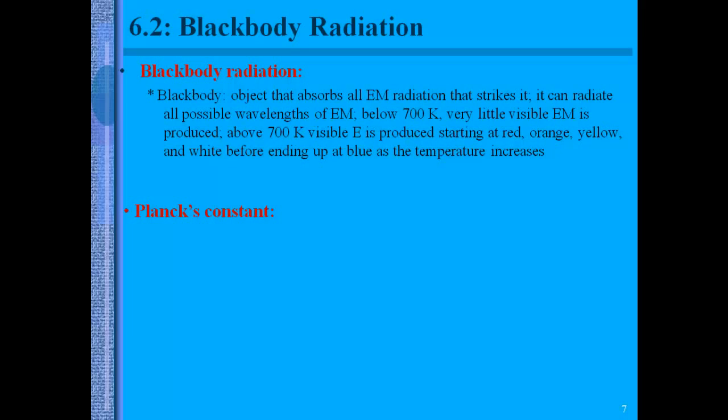But above 700 Kelvin, you'll see colors like red, orange, yellow, white, and then eventually blue, which is at the highest temperature settings. This is what happens with a flame. The flame has the blue part of the flame is the hottest part. So it goes red hot, white hot, and then blue hot being the hottest.